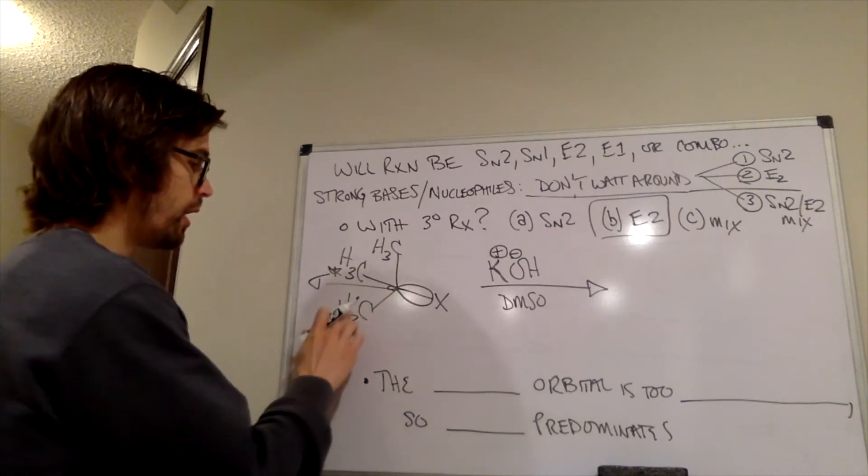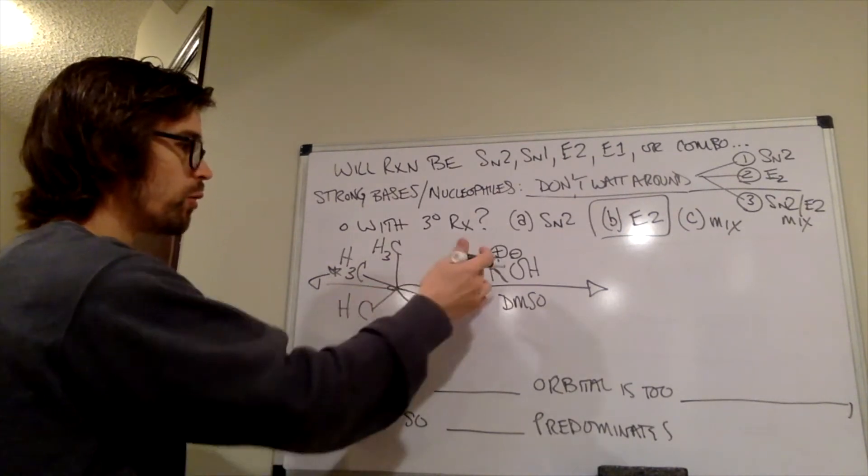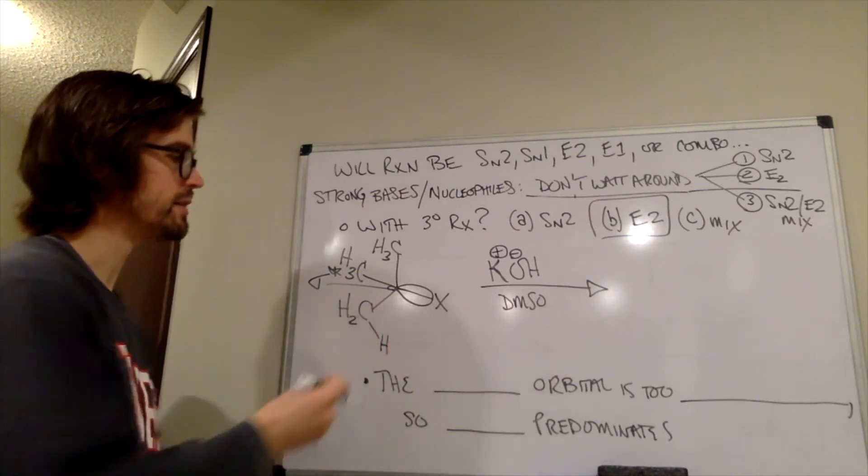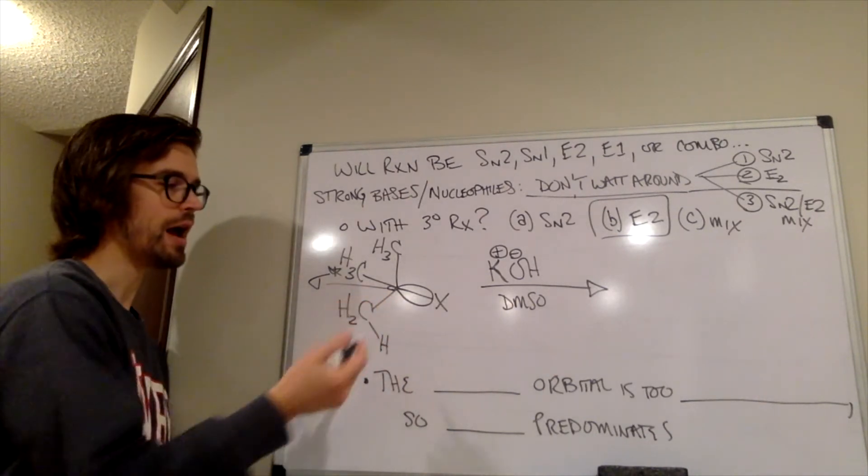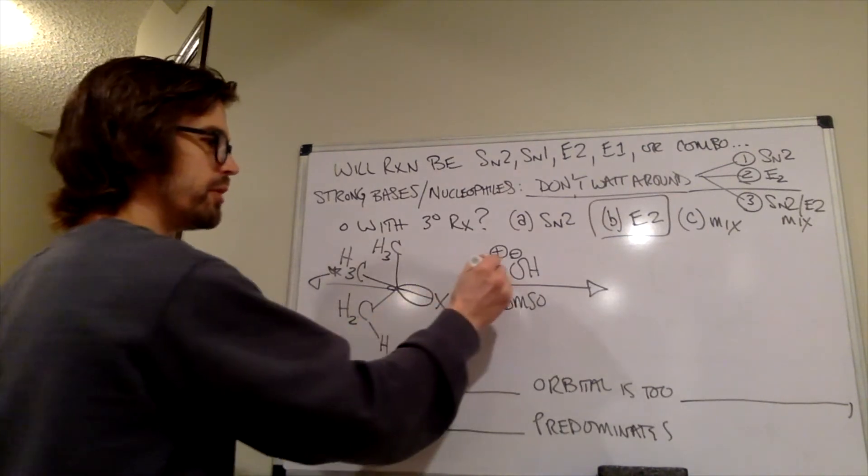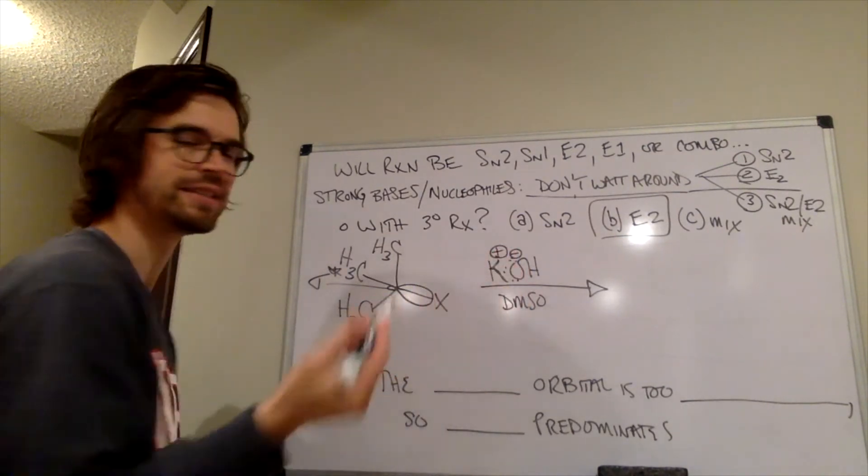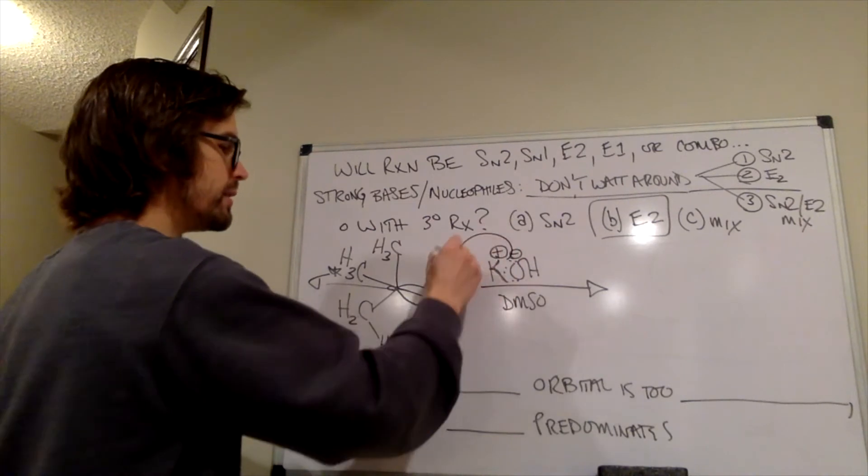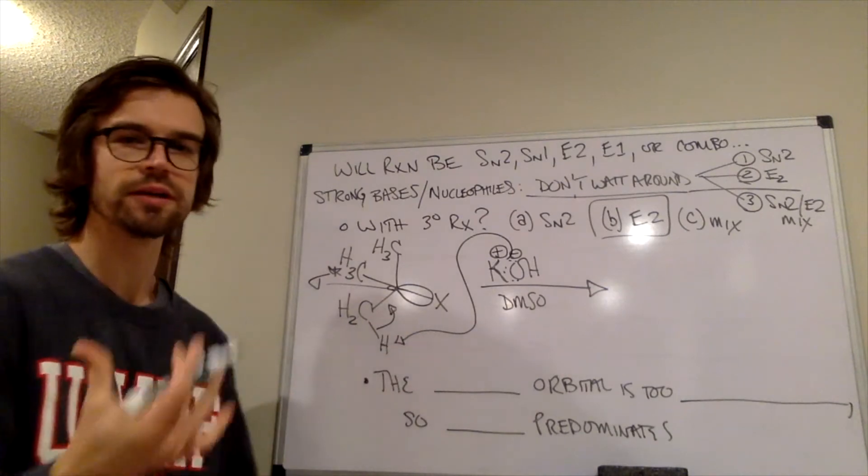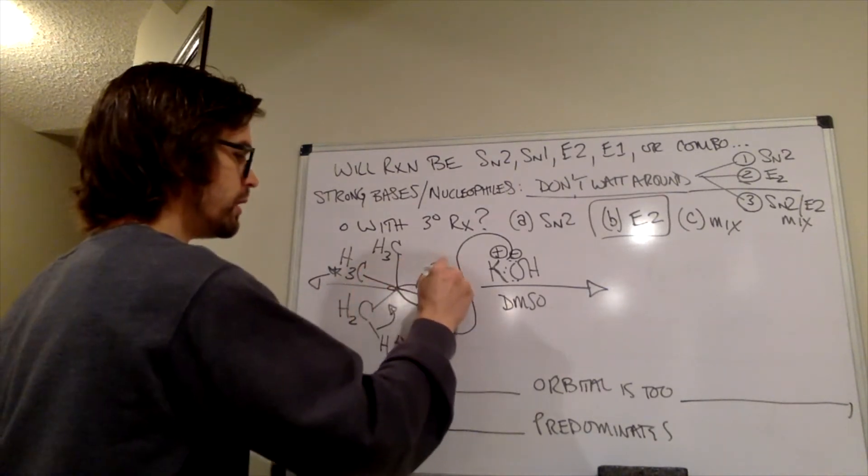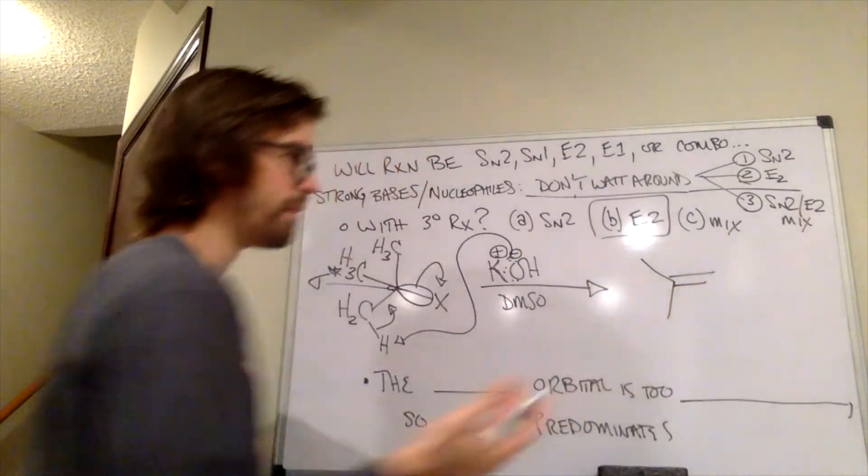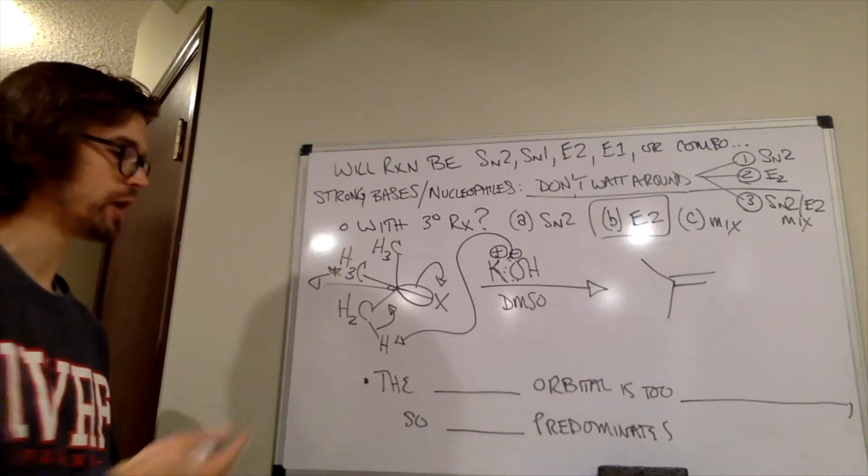So, because of that, it's really hard for that base to get there, and these carbon-hydrogen bonds that have some partial positive charge on them, we talked about that previously, are just more accessible. So, instead of an SN2 occurring, the only option is for them to bump into those hydrogens and do an E2 elimination. So, this would be, by far, the major product of this reaction.